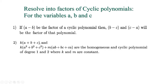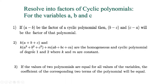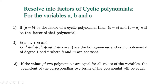Second: k(a + b + c) is a cyclic polynomial of degree 1, and k(a² + b² + c²) + m(ab + bc + ca) is the cyclic polynomial of degree 2. These two are homogeneous and cyclic polynomials of degree 1 and 2, where k and m are constants. Third: if the values of two polynomials are equal for all values of the variables, the coefficients of the corresponding terms of the polynomials will be equal. This point is needed to solve partial fraction problems.